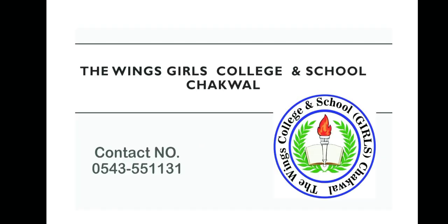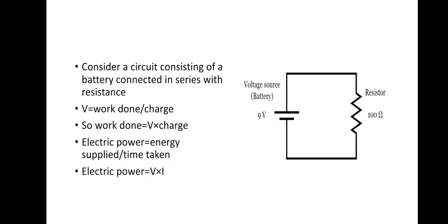To understand this topic, we consider a circuit in which we attach a battery and a resistor R. A steady current will start to flow in the circuit, and a potential difference will develop between the terminals of the resistor R.